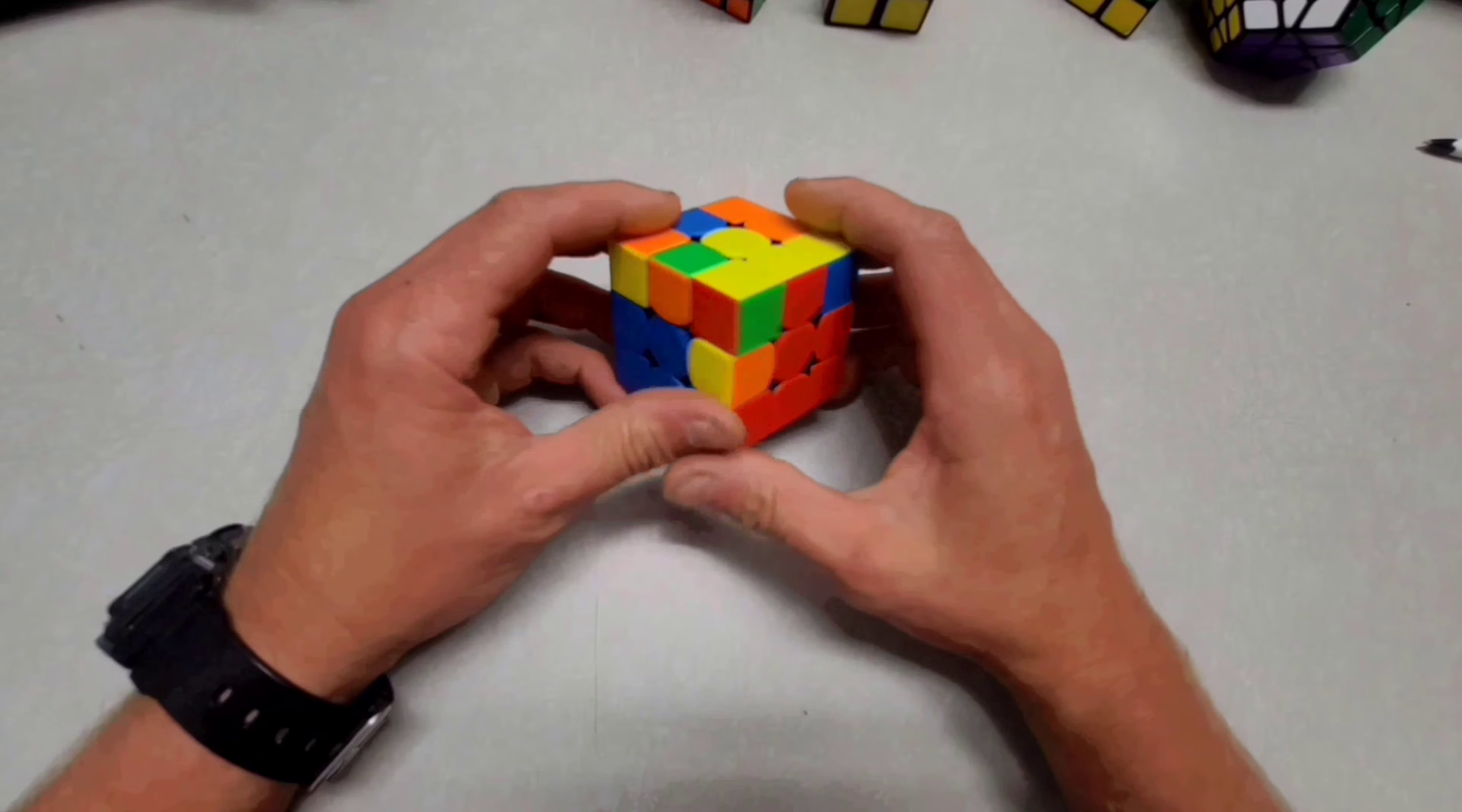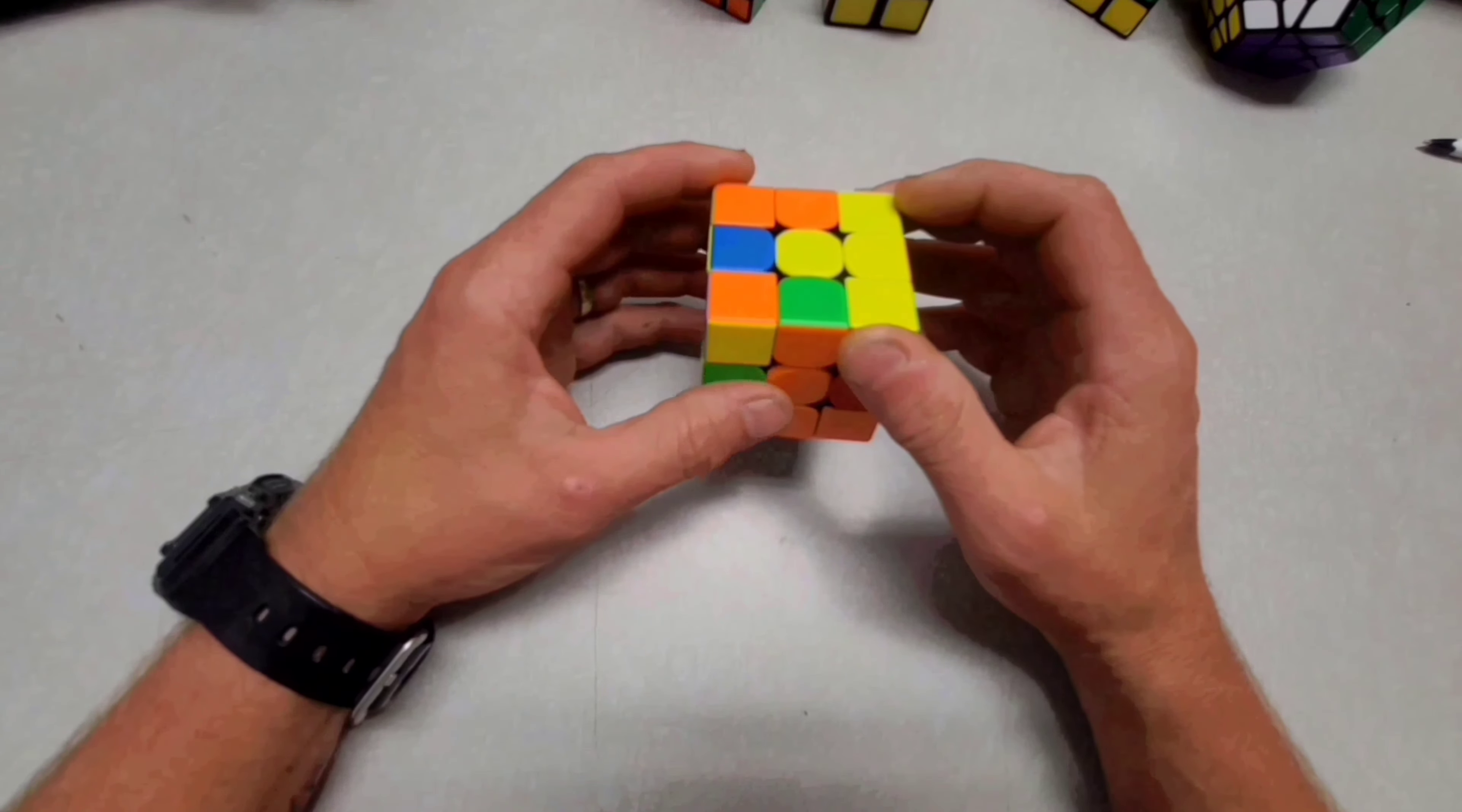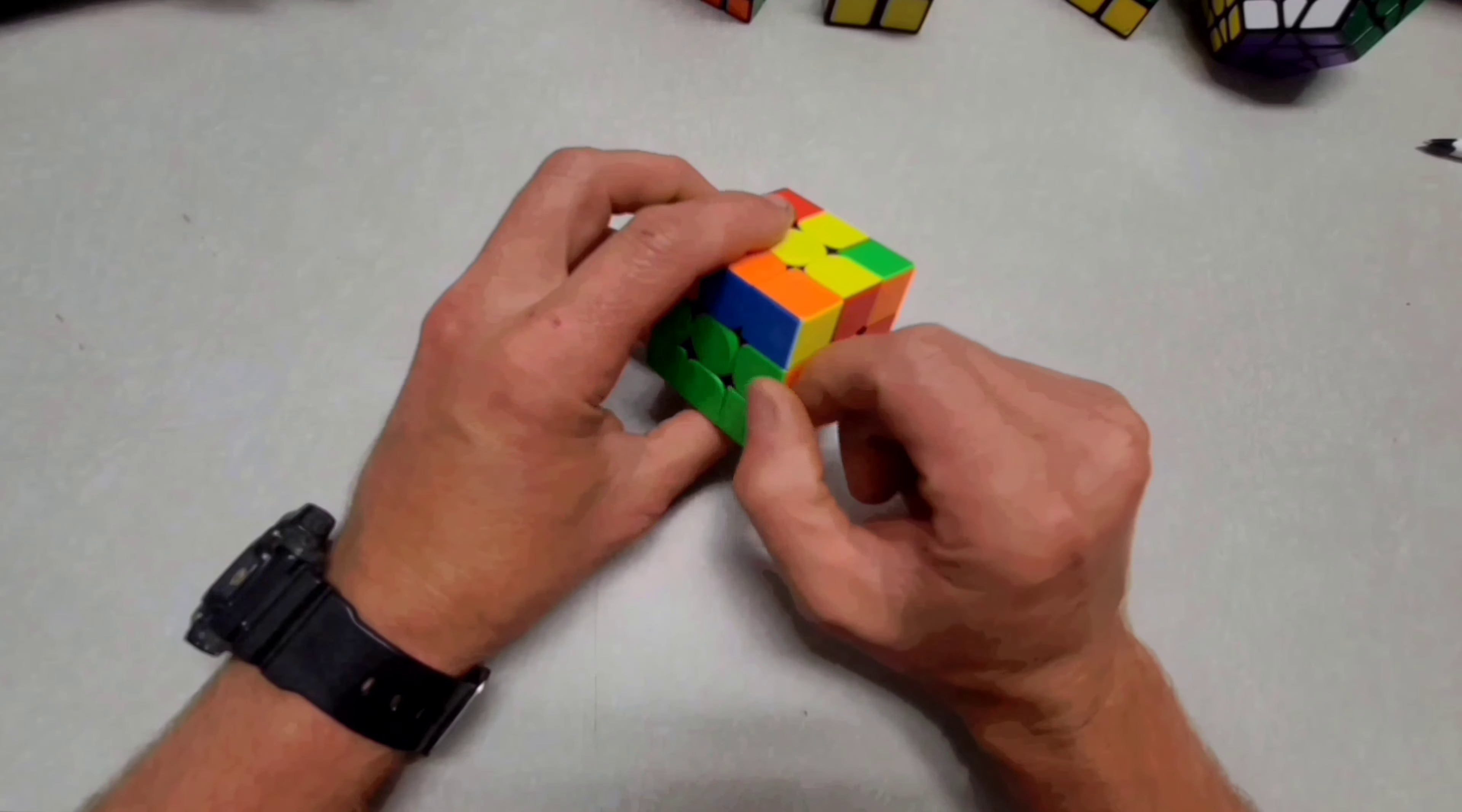Isn't that awesome? So let's look for another piece. Here's a green, orange. So we slide it over here. Here's the green and orange. This time it's going over here on the left side. So you will use this left algorithm, which is U prime, L prime, U, L, U, F, U prime, F prime. See how it went in?